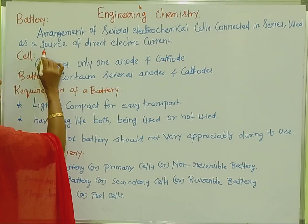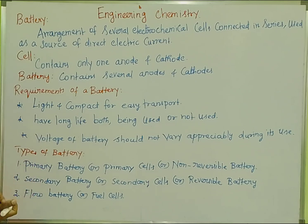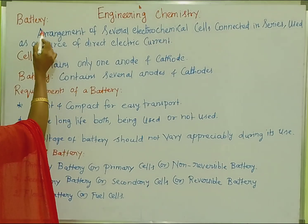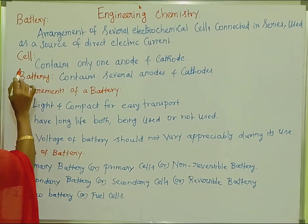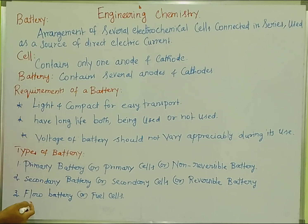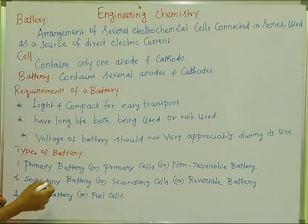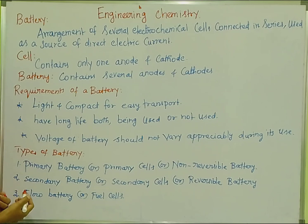What is the battery? It is the source of direct electric current. The cell contains one anode and one cathode. The cell is a single unit with one anode and one cathode.